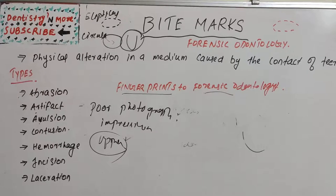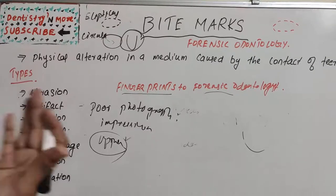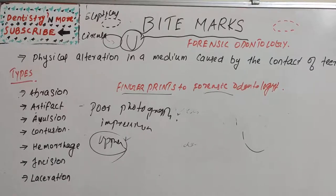If an investigator sees anything on a victim that even resembles a bite, a forensic dentist must be called immediately, because bite marks change significantly over time. If the victim is deceased, the skin may slip as the body decays, causing the bite mark to move or disappear entirely. It is therefore critical to call the forensic odontologist immediately to preserve the evidence.